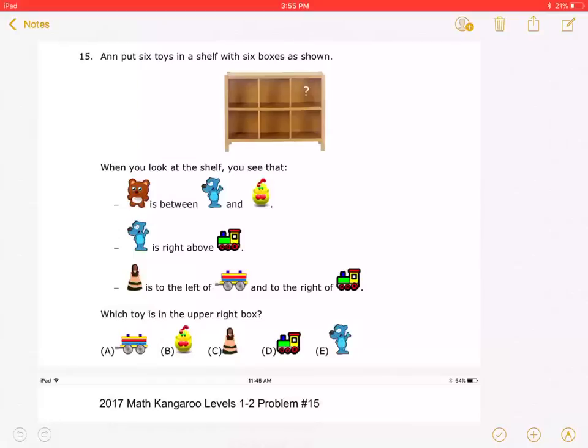This is the 2017 Math Kangaroo Levels 1-2 Problem Number 15. Put six toys in a shelf with six boxes as shown. When you look at the shelf you see that the brown bear is between the blue bear and the duck. The blue bear is right above the train. The doll is to the left of the wagon and to the right of the train. Which toy is in the upper right box?